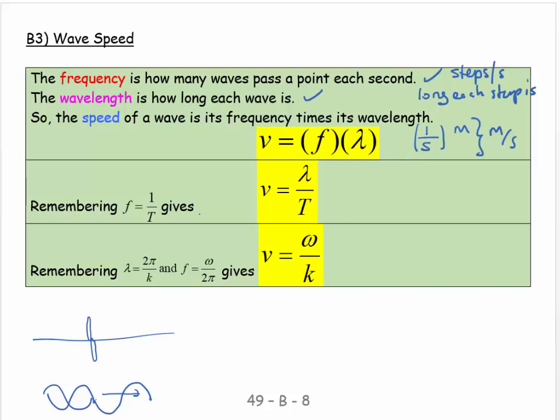I also know, of course, that F is equal to one over the period. So I can simply substitute in for the frequency and I get V equals lambda over the period. That's just a different form.